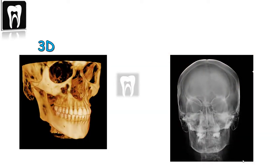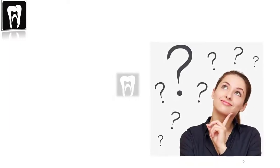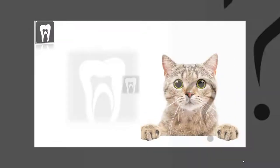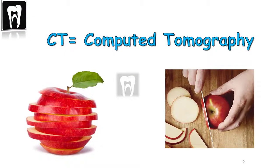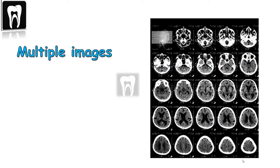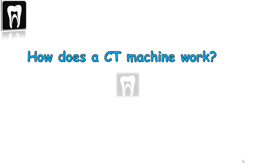Why is it called a CT? CT scans have nothing to do with cats, though people often say 'cat scan' instead of CT scan. CT stands for computed tomography — 'tomo' means slice, 'graphy' means imaging. It's like slicing an apple and putting it back together: a cross-sectional imaging picture of the internal body structures generated by a computer from multiple images.